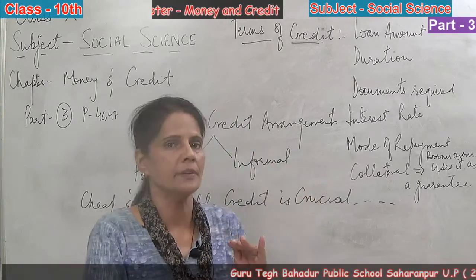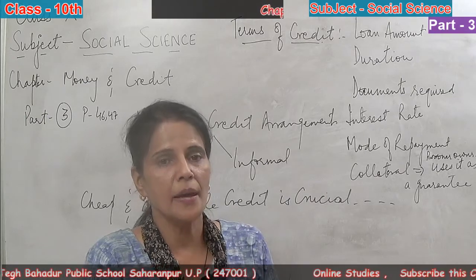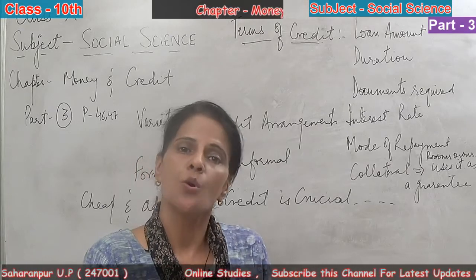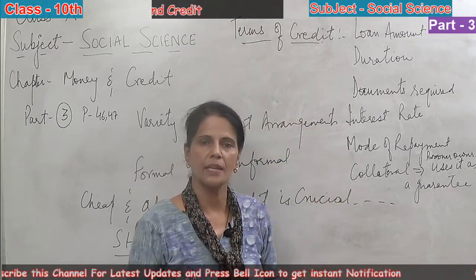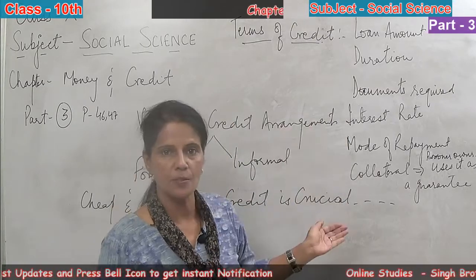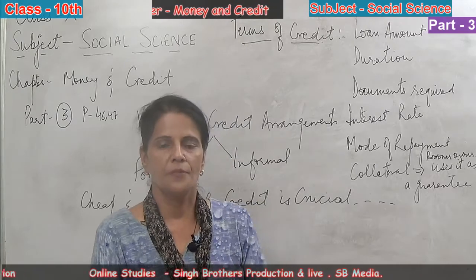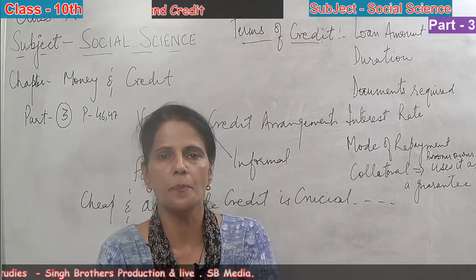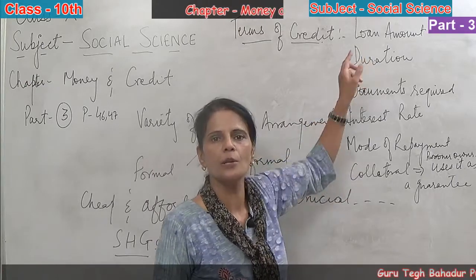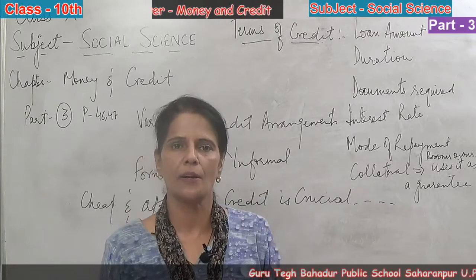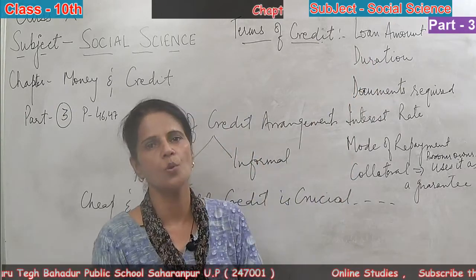Today we are going to learn about the different terms of credit. In your NCERT, the example of Megha is given. Megha wants to take a home loan and she goes to the bank, which asks her to fulfill all these terms. When we go to the formal sectors, first of all we have to apply for a loan — giving an application stating the purpose and amount we want to borrow. So the first term of credit is the loan amount — 10 lakh, 5 lakh, or whatever you want to avail.